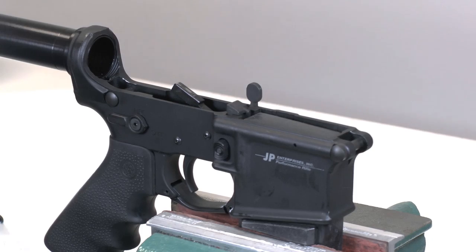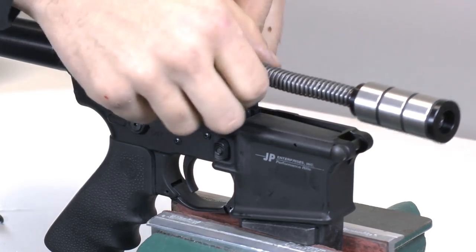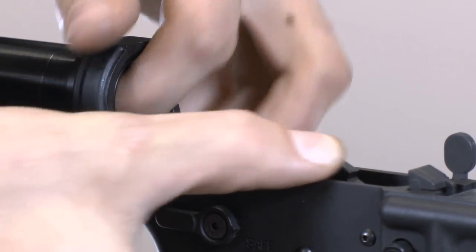Now, install the SCS unit oriented this way. If you have a rifle length stock, insert the included spacer prior to the SCS.